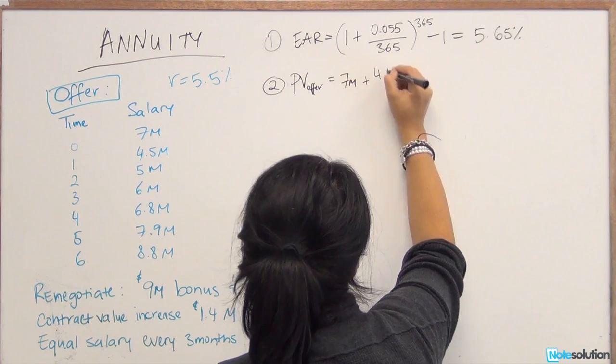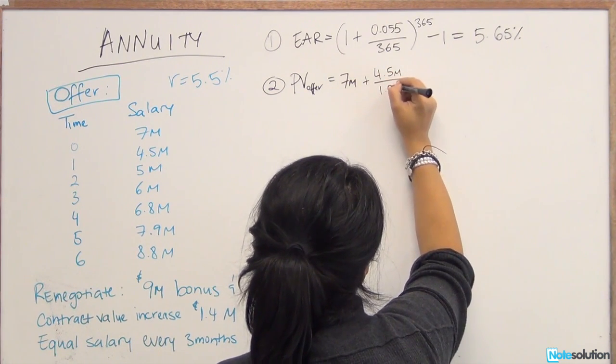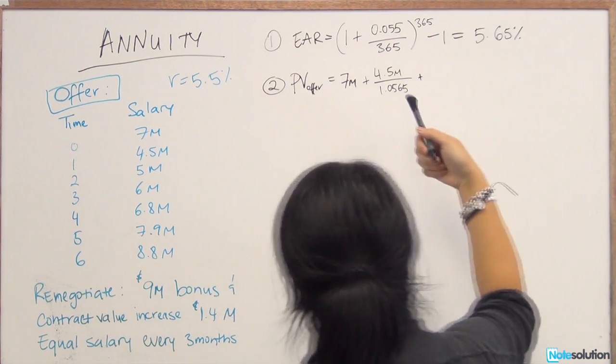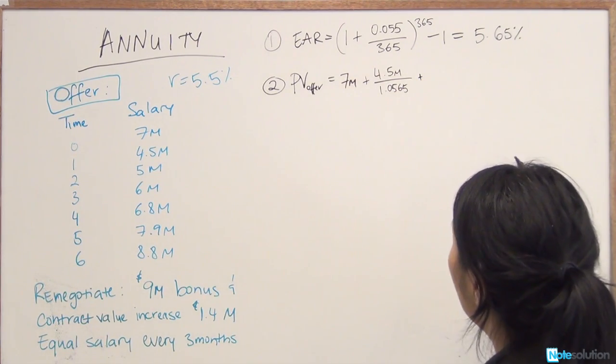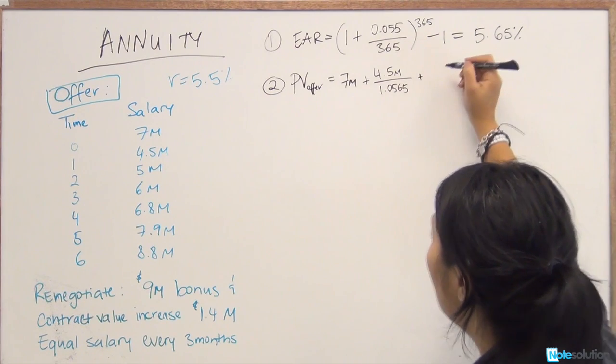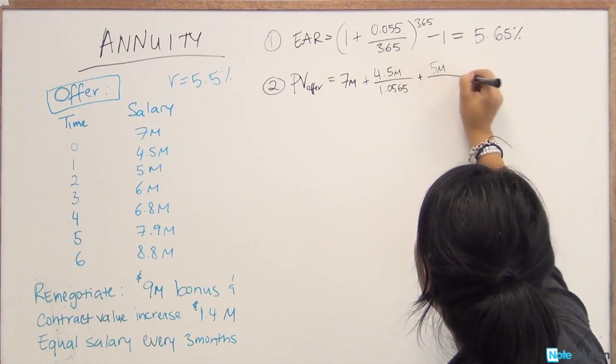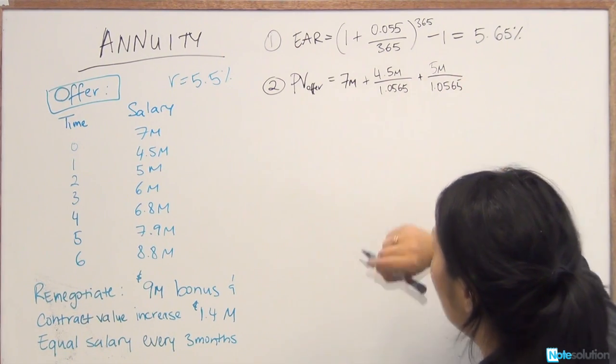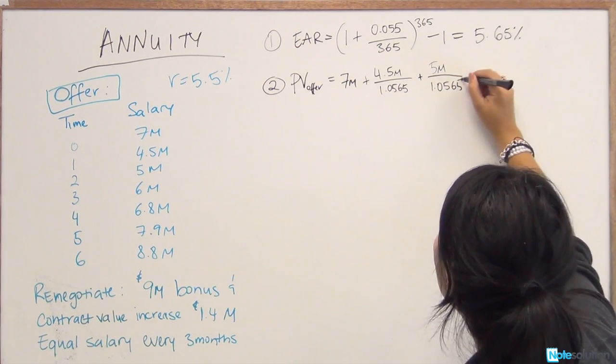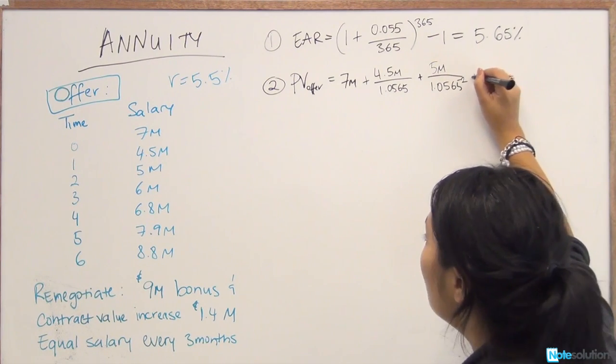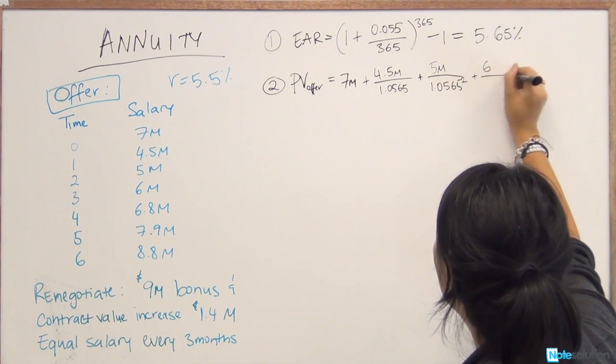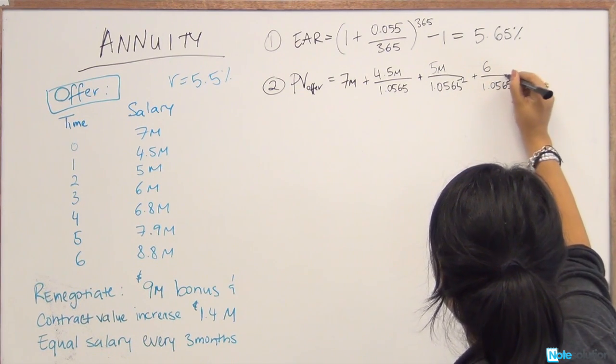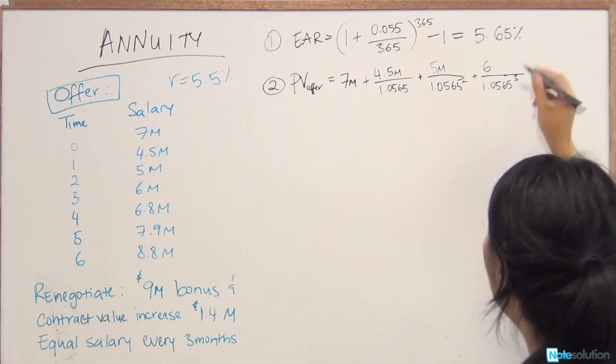Plus $4.5 million. This is going to be compounded for one year, so your T is equal to one. Plus $5 million. You're receiving this cash flow in time period two, so that will be to the power of two. Plus $6 million. That's going to be period three, so this is to the power of three.